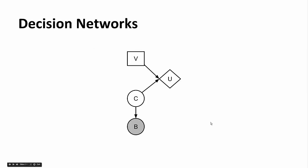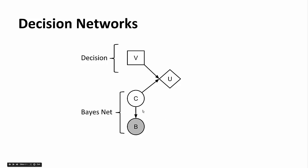Here is what the standard decision network looks like. This decision network has three components. The first is V, our decision node — we get to decide what we want to do for V. Below we have a base net; I've included one with nodes C and B, but in general you can have any complex base net. Some nodes will be observed — for example, B is observed and serves as evidence for our decision. On the right we have our utility node, which depends on the decision we choose and some uncertain outcome from the base net. Our goal is to pick the action that maximizes our utility.